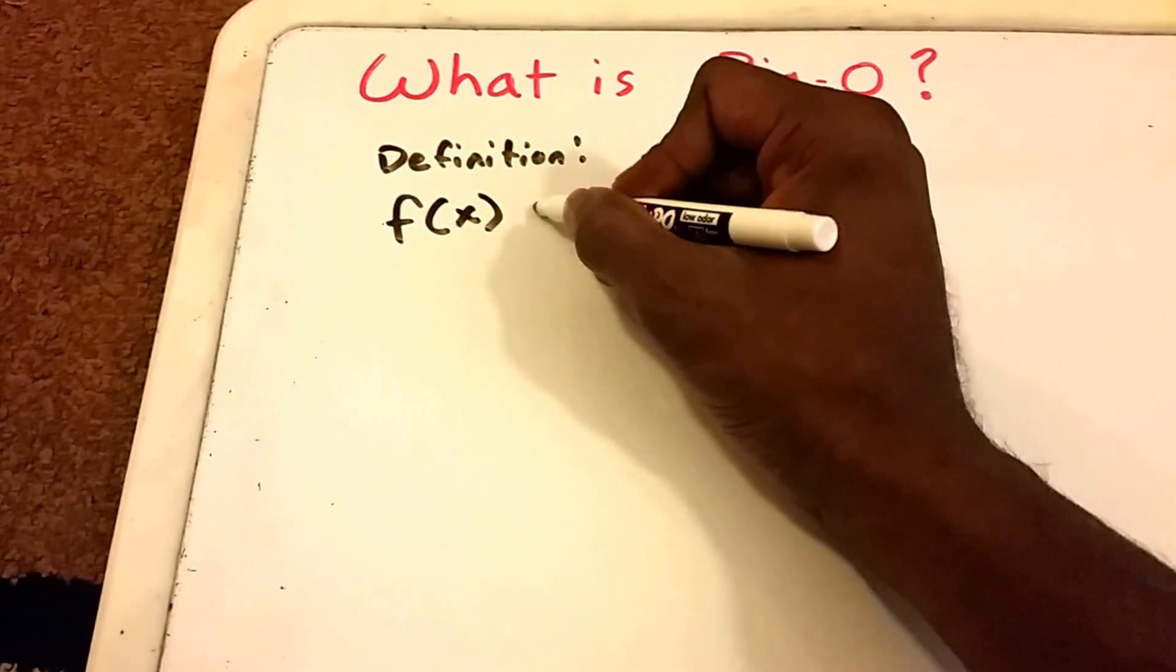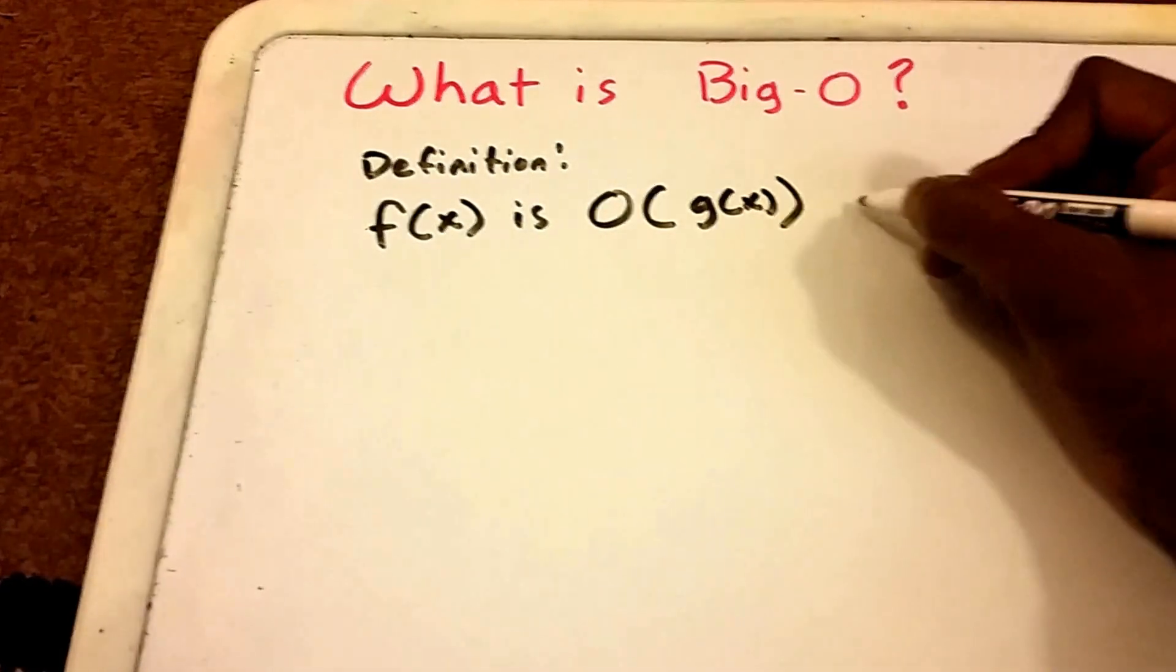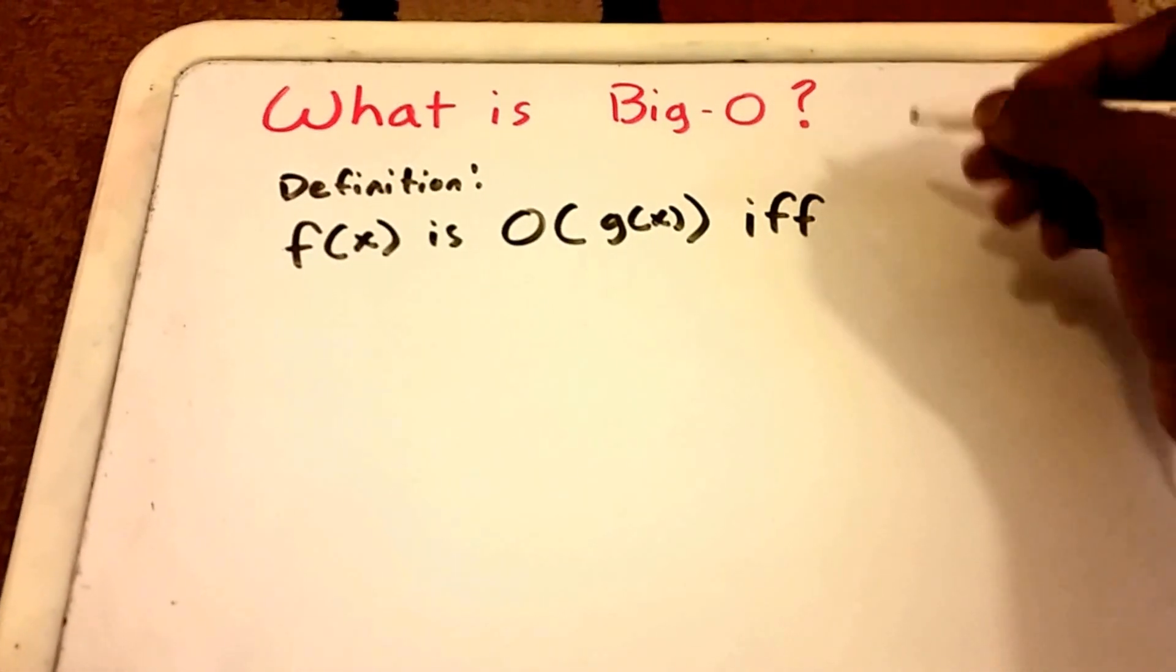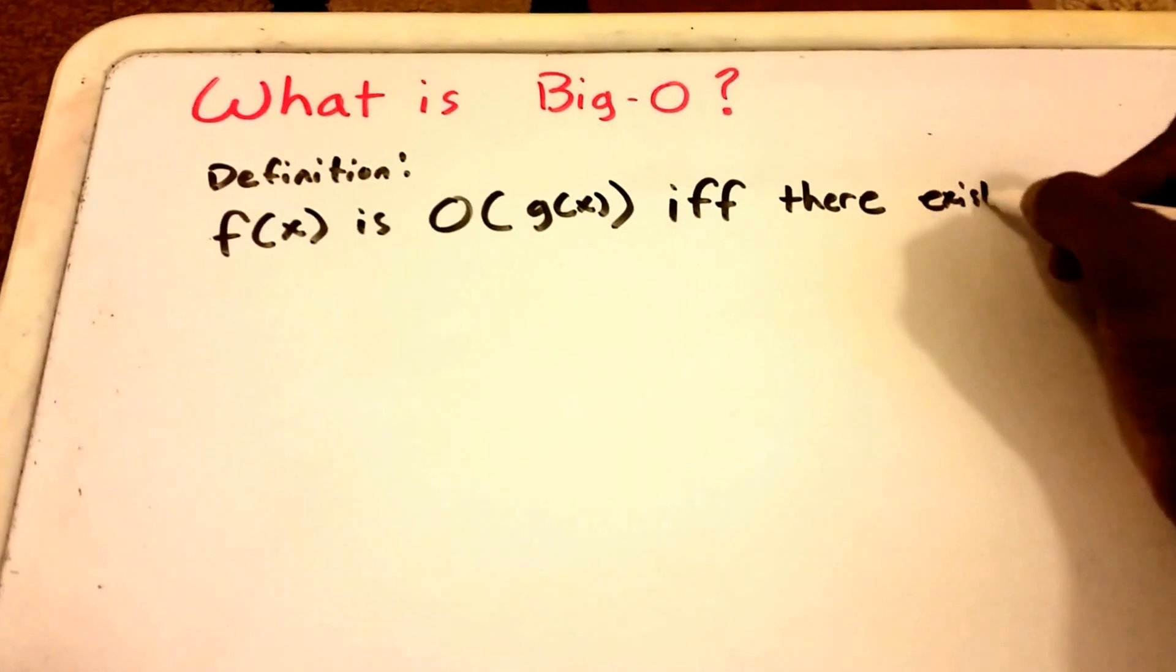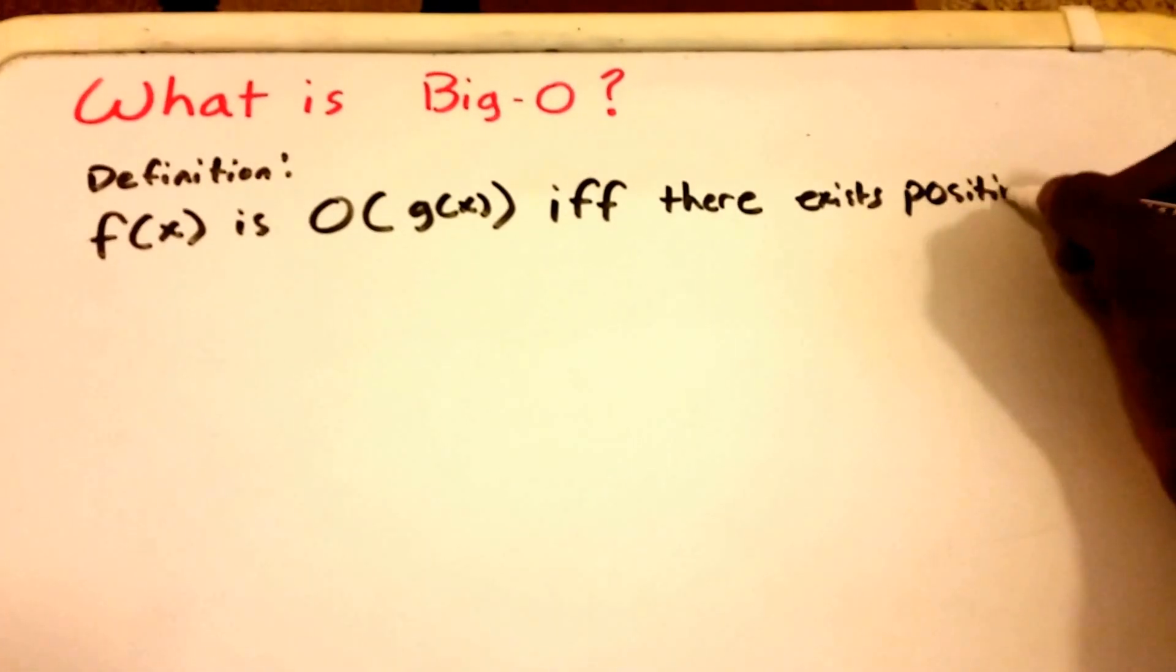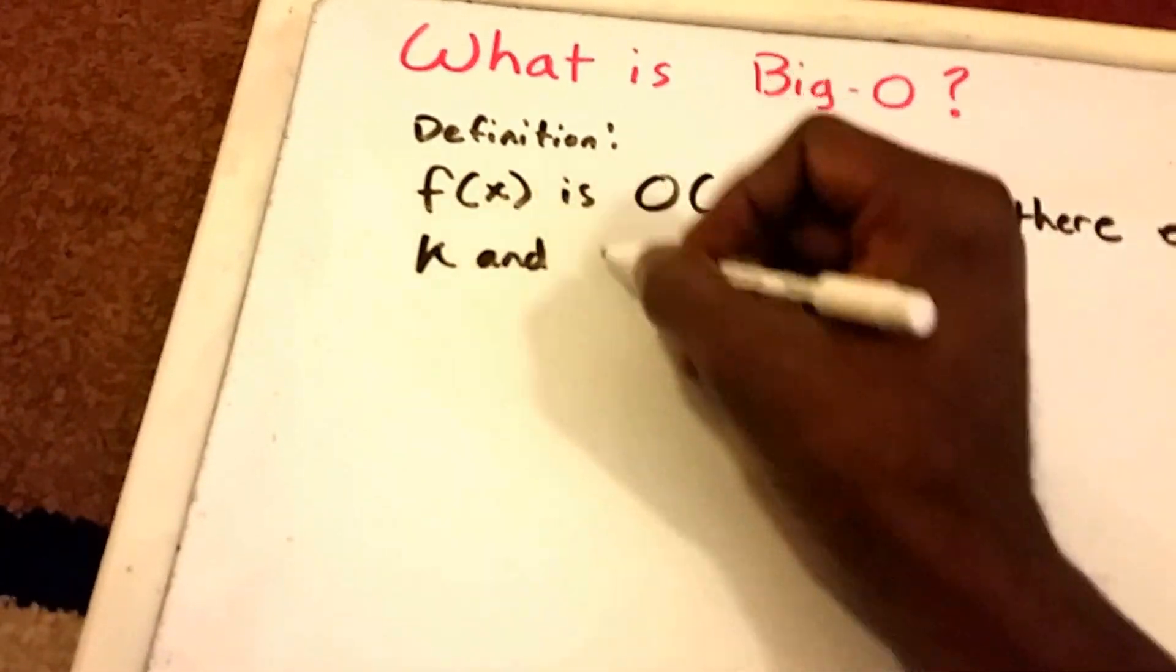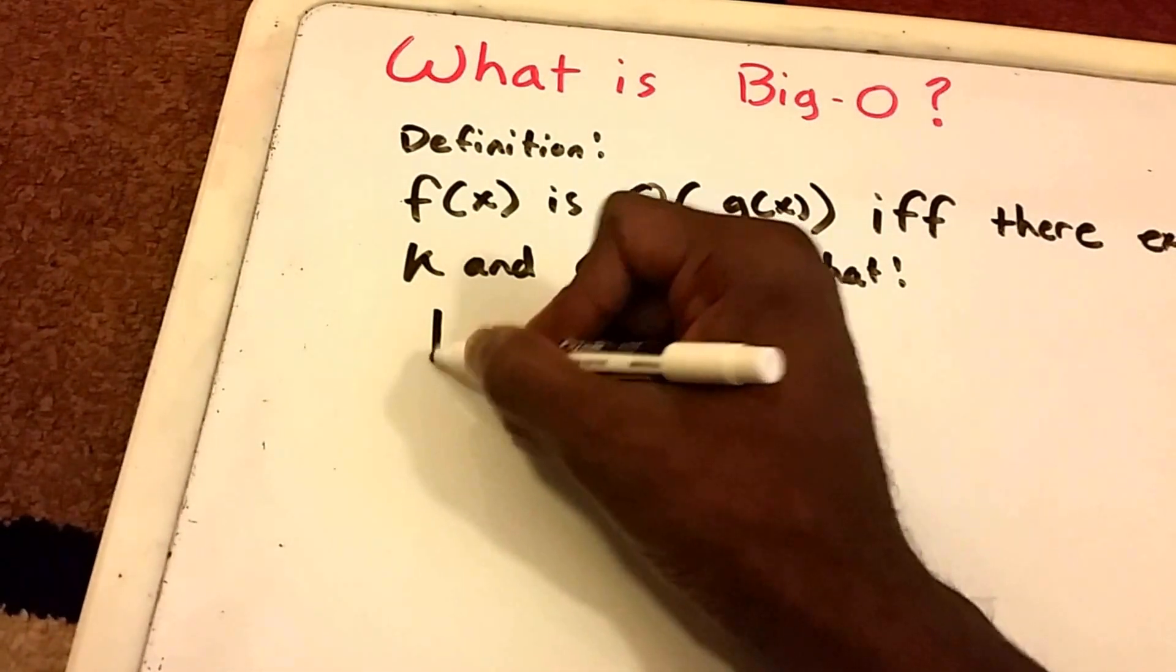If and only if there exist positive constants, positive constants, and we're going to call them K and C such that we get the following...